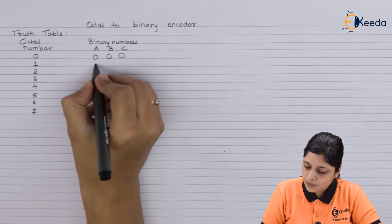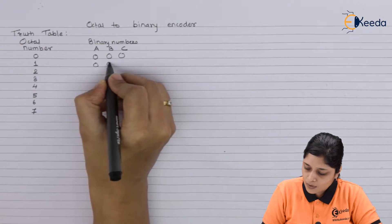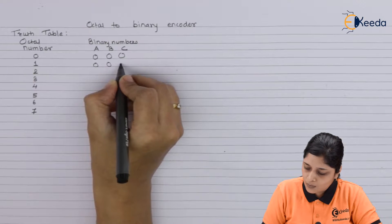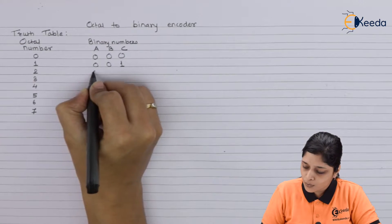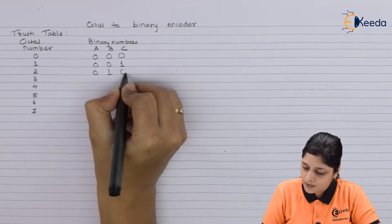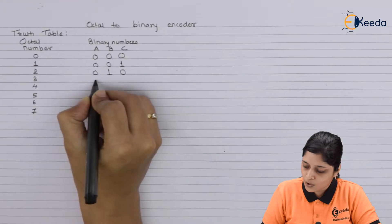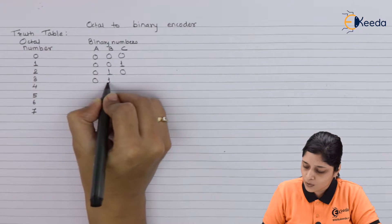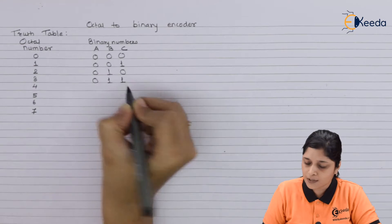For 1, we have 0, 0, 1. For 2, we have 0, 1, 0. For 3, we have 0, 1, 1.